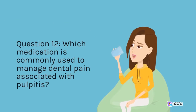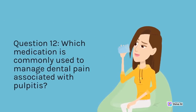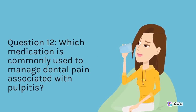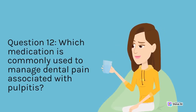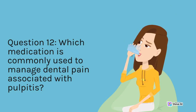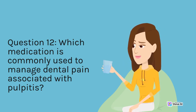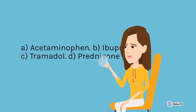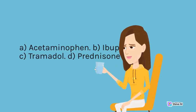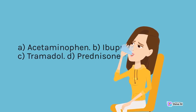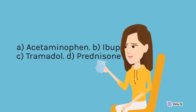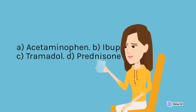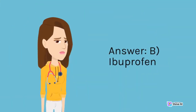Question 12. Which medication is commonly used to manage dental pain associated with pulpitis? A. Acetaminophen. B. Ibuprofen. C. Tramadol. D. Prednisone. Answer: B. Ibuprofen.